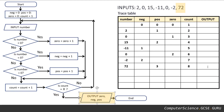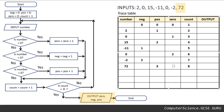We're going to output zero, neg, and pos. So we're going to look at what the last value for zero is. If we look at the zero column, our last value stored as zero was two. So we're going to put a two.